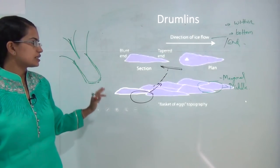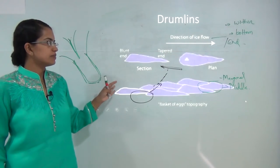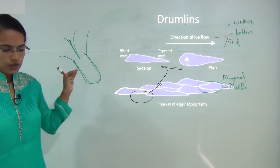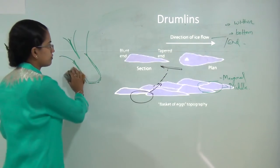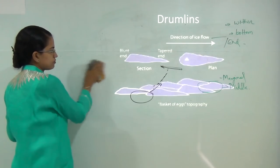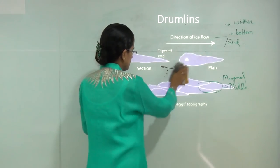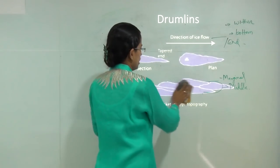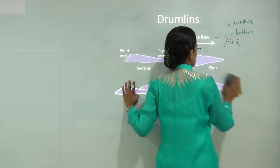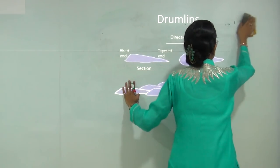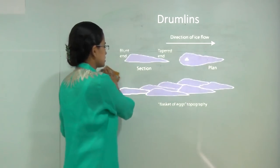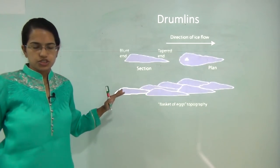Drumlins, as already discussed, show the direction of ice movement, and you can see the basket-of-egg topography. You have small hills visible towards the end of the glacial depositional features.